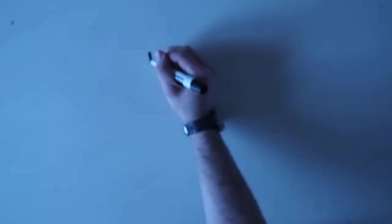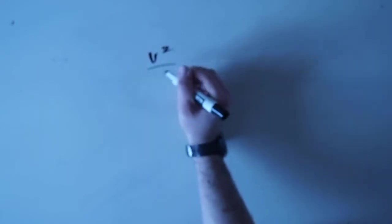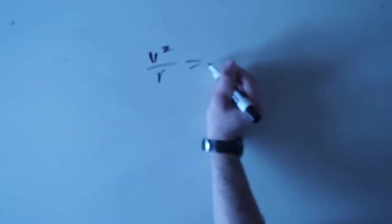So first we need to find the radial acceleration of objects at the equator. We have how long a day is and the radius of the Earth. And we know v squared over r is equal to radial acceleration.